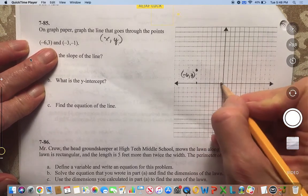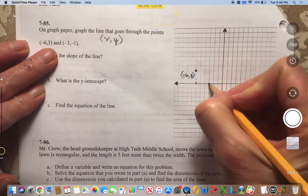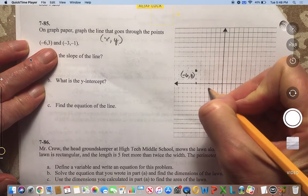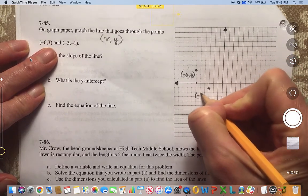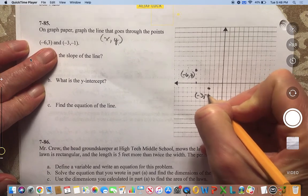And then we're going to do (-3, -1). So that's right here. Okay, so that's (-3, -1).